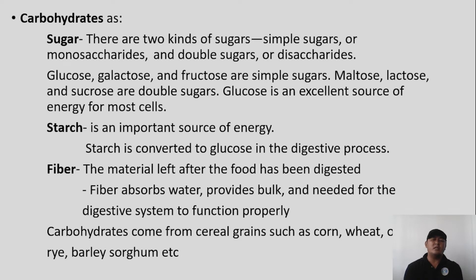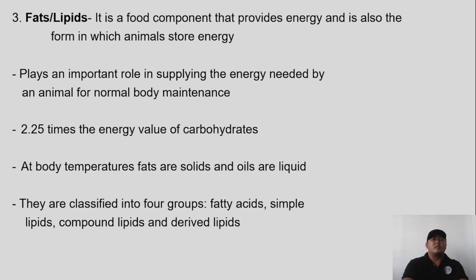Carbohydrates come from cereal grains such as corn, wheat, oats, rye, barley, sorghum, and others. The next essential nutrient needed by animals is fat or lipids. Fat is a food component that provides energy and is also the form in which animals store energy.